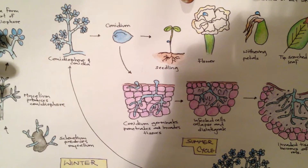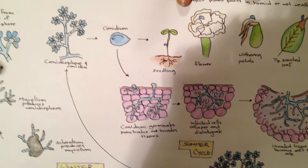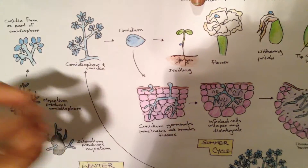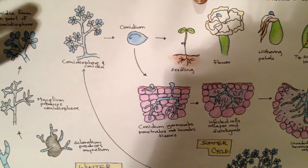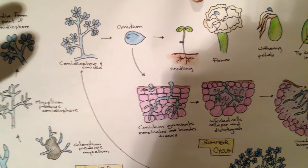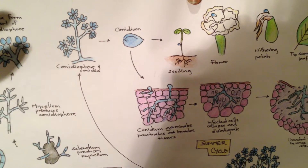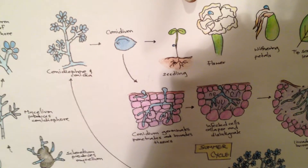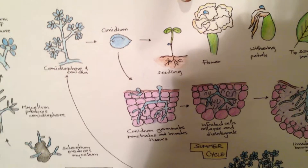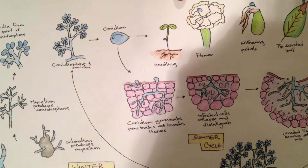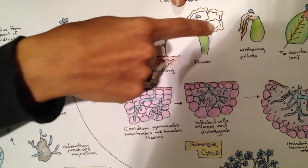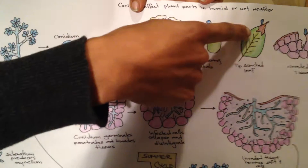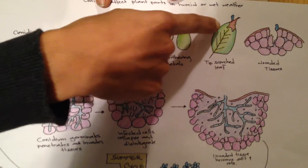Botrytis cinerea has different enzymes — chitinases and pectinases — which break down the cell walls. This is what causes the grape to start to shrivel up and basically removes the water, concentrating the sugars, and that's what makes the good dessert wines. Other symptoms include the blossoms wilting and withering, and the leaf tips can get scorched.